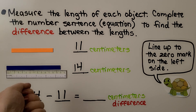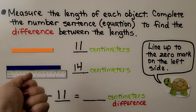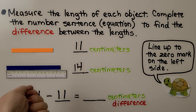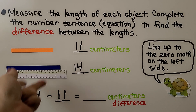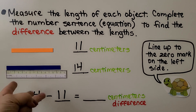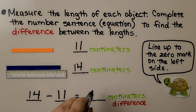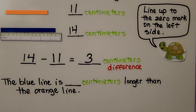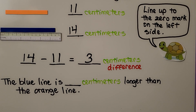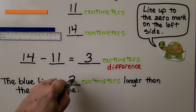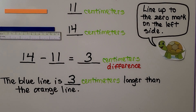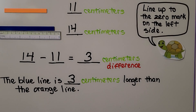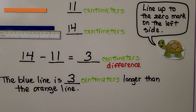We can start at 11 and count on to 14: 11, 12, 13, 14 — we have 3 centimeters difference. The blue line is 3 centimeters longer than the orange line.